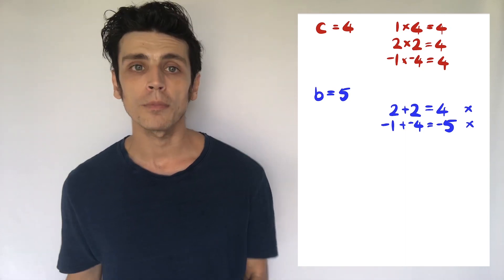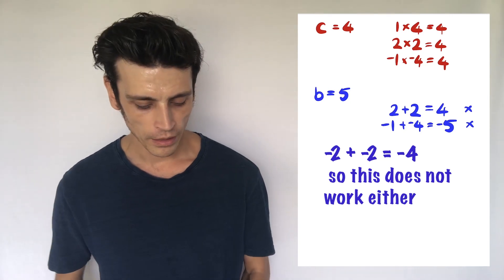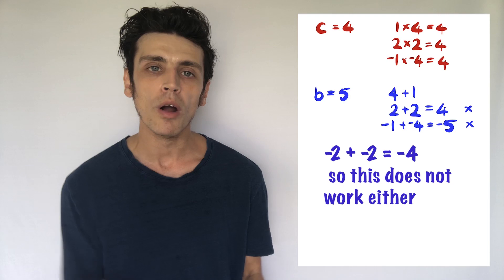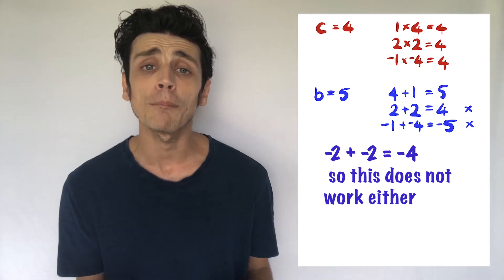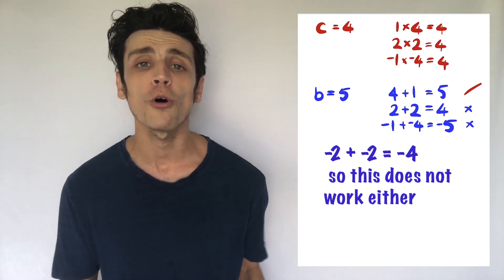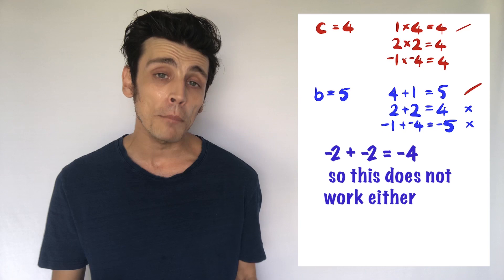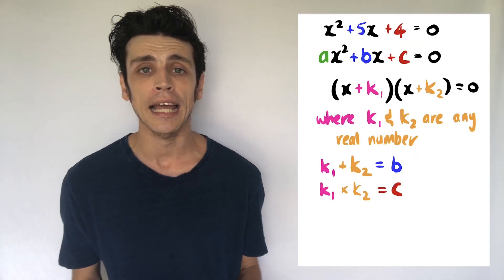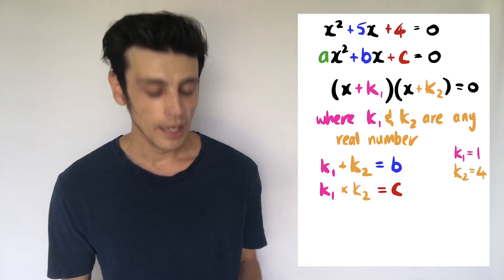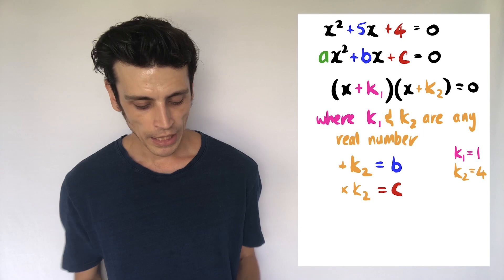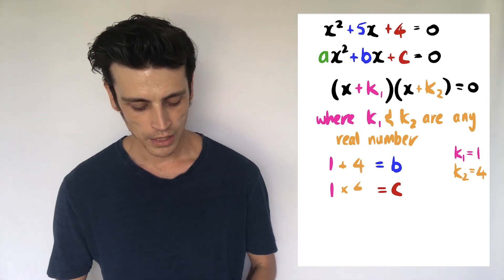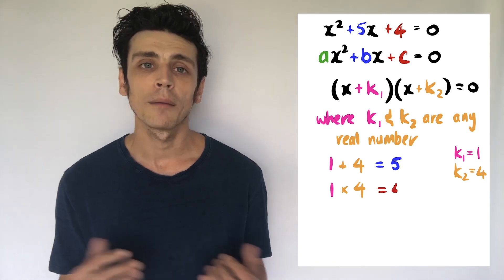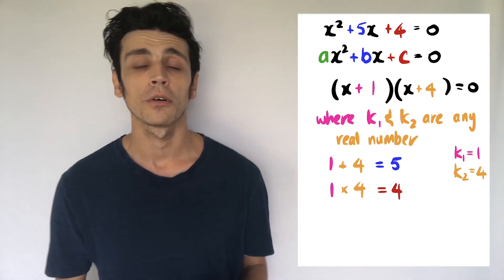Now we check which pair also adds up to b = 5. Two plus two gives four — not five, so that doesn't work. Negative one plus negative four gives negative five — our b is positive five, so that doesn't work either. But four plus one gives five, and four times one gives four, which matches both our b and c values. So k1 = 1 and k2 = 4, and since both are positive the order doesn't matter. We factorize to (x + 1)(x + 4) = 0.